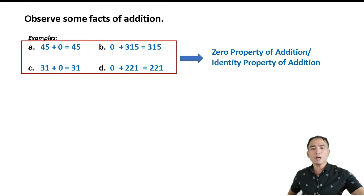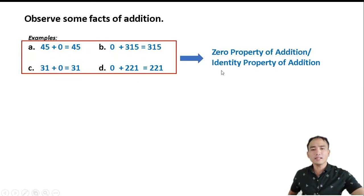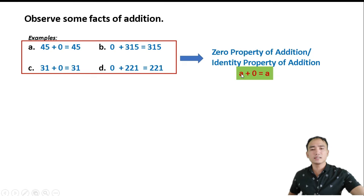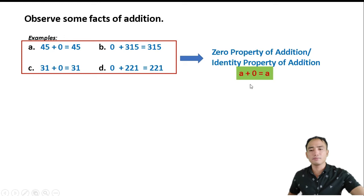This property is called the Zero Property of Addition, or the Identity Property of Addition. It is called identity because the identity element for addition is 0. It is written as a plus 0 equals a. So any number added to 0 is the number itself.